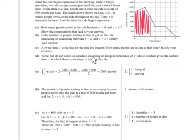Write but do not solve an equation involving the integral expression of R whose solution gives the earliest time t at which there is no longer a line for the ride. So if there's no longer a line, what would that be? The number of people equals 0. So basically, I want to write an equation where the number of people equals 0.